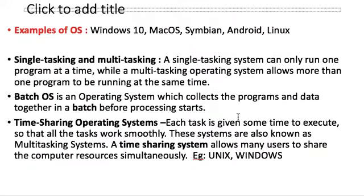Through the operating system we are able to access the internet. Examples of OS: Windows 10, Mac OS, Symbian, Android, Linux. Symbian and Android are smartphone operating systems. Linux is an open-source OS. Mac OS and Windows 10 are proprietary — Windows 10 is owned by Microsoft, and Mac OS is owned by Apple and comes only on Apple computers.